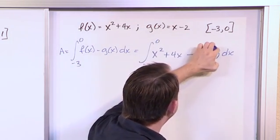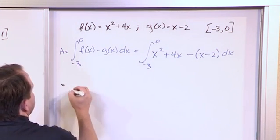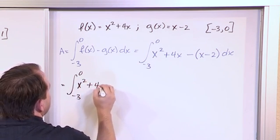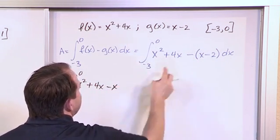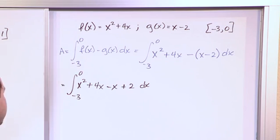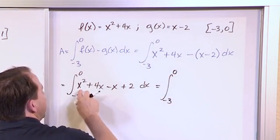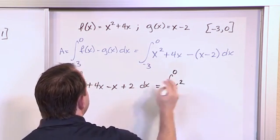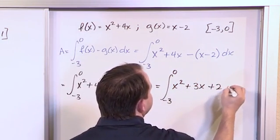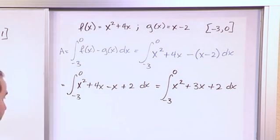Because g of x is this whole quantity, you want to put it in parentheses to make sure that you get the right thing there. So the integral is negative 3 up to 0, and then you'll have x squared plus 4x. This will be minus x, and then this will be plus 2. So we can simplify this integral, negative 3 up to 0. We have the x squared, that remains the same. 4x minus x becomes 3x, and then the 2 becomes the same. So really, this is what we want to integrate: x squared plus 3x plus 2, we want to integrate from negative 3 up to 0.